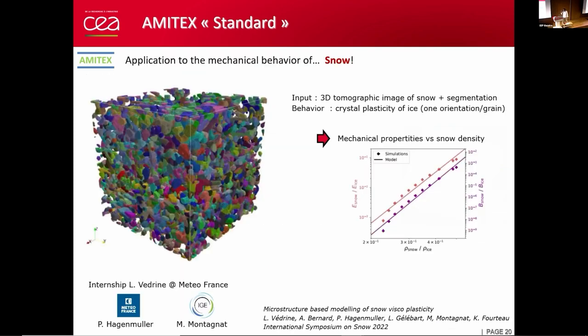Another original and recent application was with a colleague at Meteo France. We used AMITEX to run simulation on snow. This is a CT scan of snow. He has identified the different grains of snow, and in each grain we have crystal plasticity. This is also a rather demanding application.